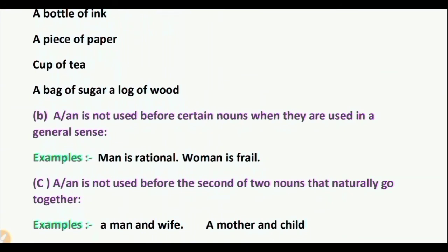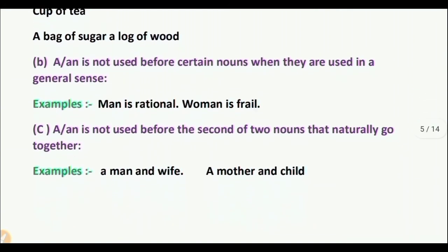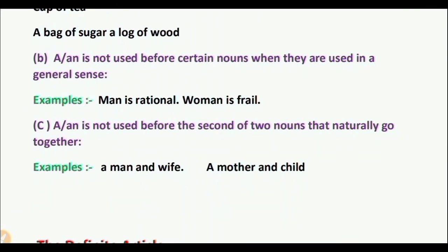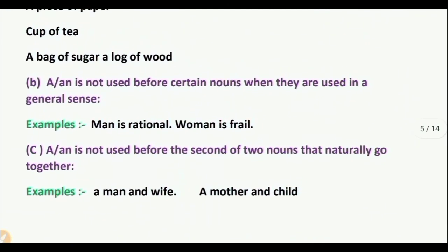B: A or AN is not used before certain nouns when they are used in a general sense. Examples: 'Man is rational,' 'Woman is frail.' C: A or AN is not used before the second of two nouns that naturally go together. Examples: 'a man and wife,' 'a mother and child.' So we cannot say 'man and a wife' or 'a mother and a child.' That is the use and omission of the indefinite article A or AN.